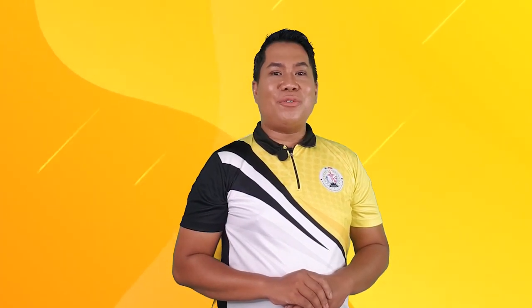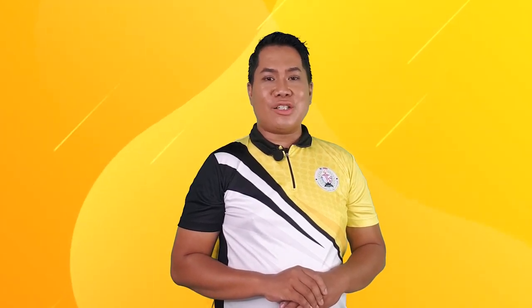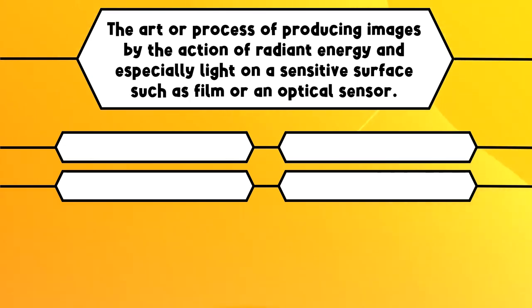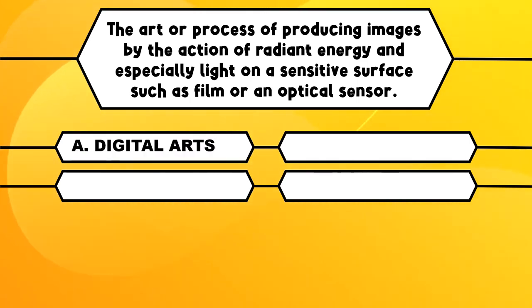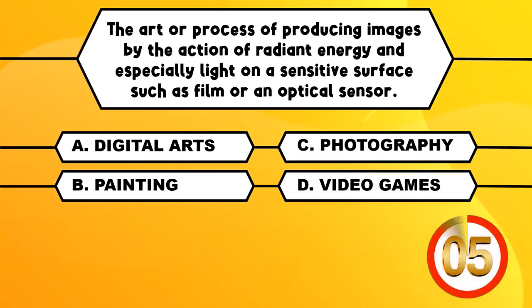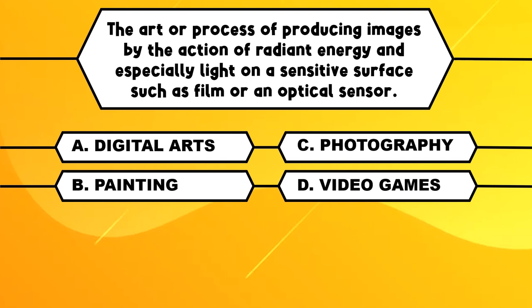Now, challenge yourself in a 5-item quiz. I will read the question and choices once. You are only given 5 seconds to write the letter of the correct answer for each question. This is the Art Pop Quiz Challenge. Number 1. The art or process of producing images by the action of radiant energy and especially light on a sensitive surface such as film or an optical sensor. A. Digital Arts. B. Painting. C. Photography. D. Video Games. The correct answer is C, Photography.